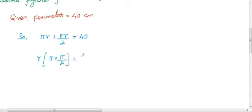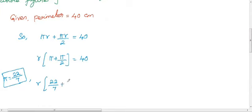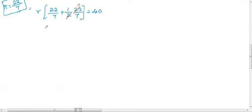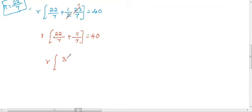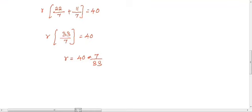We know that the value of π is 22 by 7, so we plug in the value. R into 22 by 7 plus 1 by 2 into 22 by 7 equals 40. Since 22 by 2 becomes 11, we get R into 22 by 7 plus 11 by 7 equals 40. So 22 plus 11 becomes 33, giving us 33 by 7.